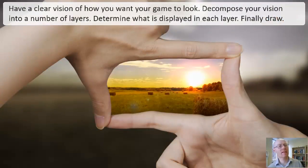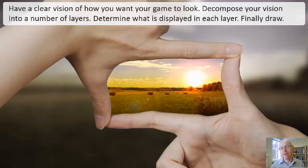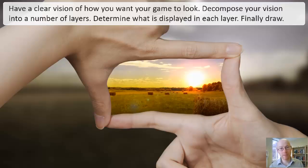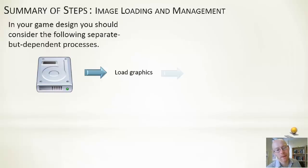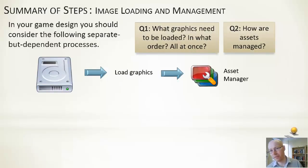The practical advice here is: have a clear vision of how you want your game to look — be able to see it in your mind's eye. Depending on the game, work out if that separates into a number of different layers or elements, and what needs to be displayed in each of those layers. Thinking about how to decompose the game using that particular mechanism will help take a big complex problem and break it down into a number of smaller, more manageable parts.